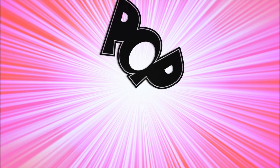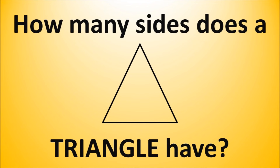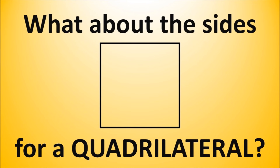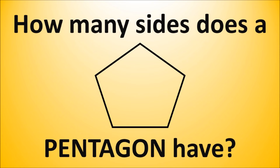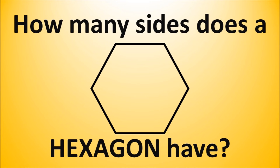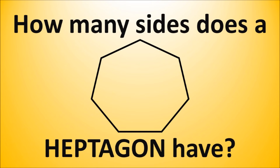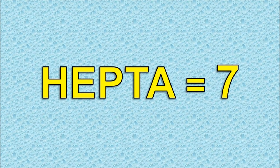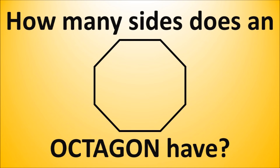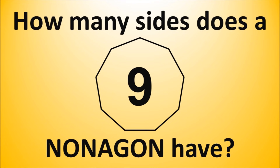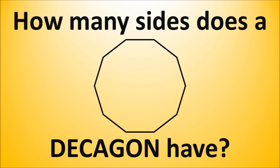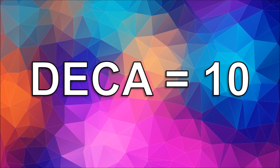Alright kids, it's time for a pop quiz! How many sides does a triangle have? Three — tri means three. A quadrilateral? Four — quad means four. A pentagon? Five — penta means five. A hexagon? Six — hex means six. A heptagon? Seven — heptah means seven. An octagon? Eight — octo means eight. A nonagon? Nine — nona means nine. A decagon? Ten — deca means ten.